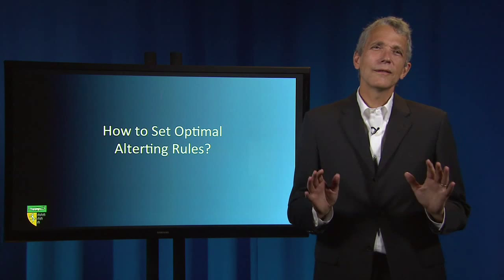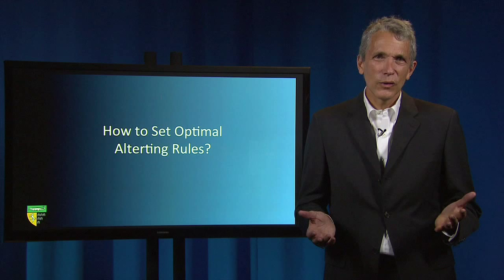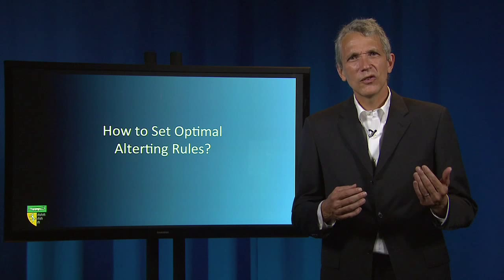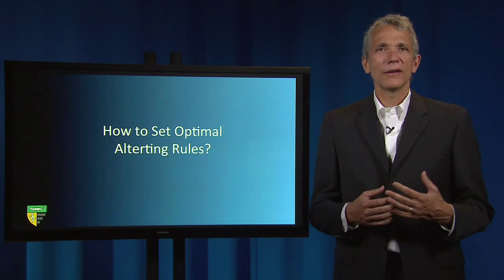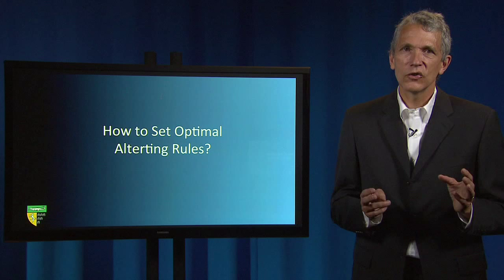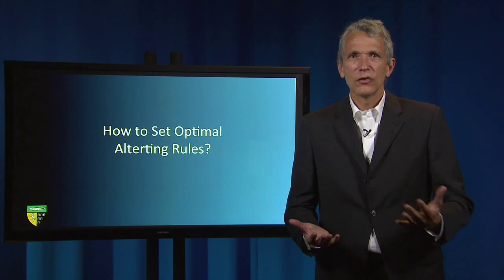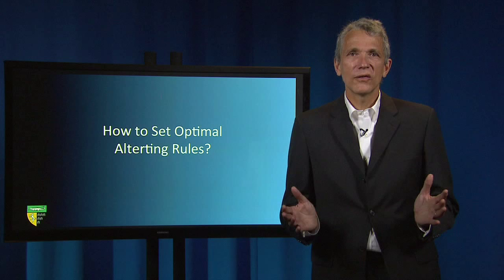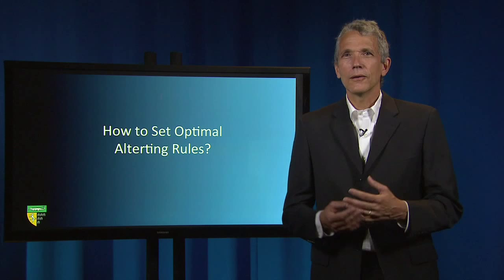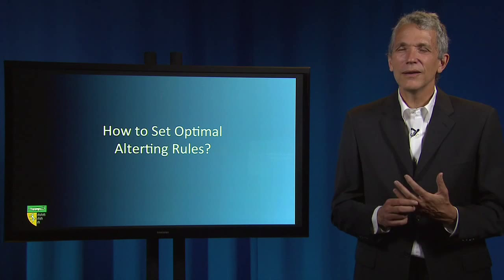Finally, once lawmakers have decided that a rule should be contractable and decided whether to adopt a majoritarian or minoritarian default, they must still establish separate rules governing how private parties can contract around the default legal treatment. Altering rules establish the necessary and sufficient conditions for displacing a default. Usually, lawmakers trying to facilitate contractual freedom and efficiency will allow multiple altering means so as to minimize the cost of contracting around a default. But as with the default setting, the setting of altering rules should take into account the costs of altering, the cost of various kinds of error, and the possibility that altering can impose negative externalities on others.